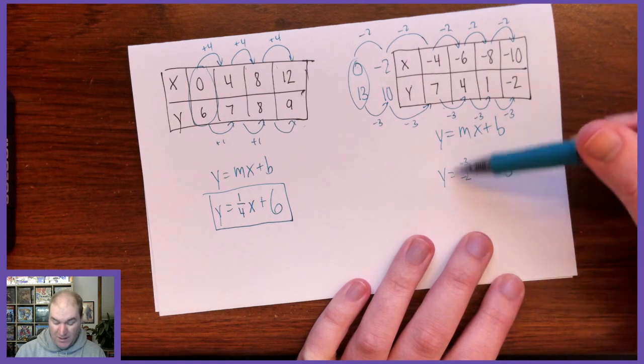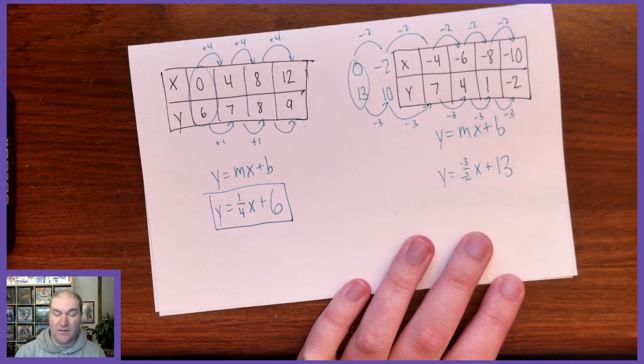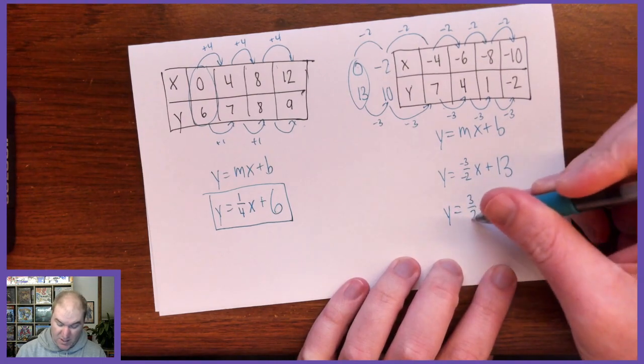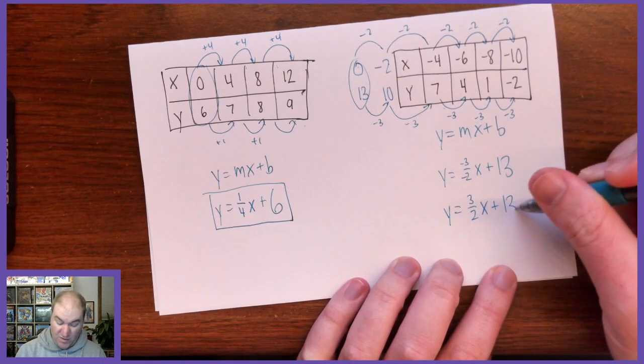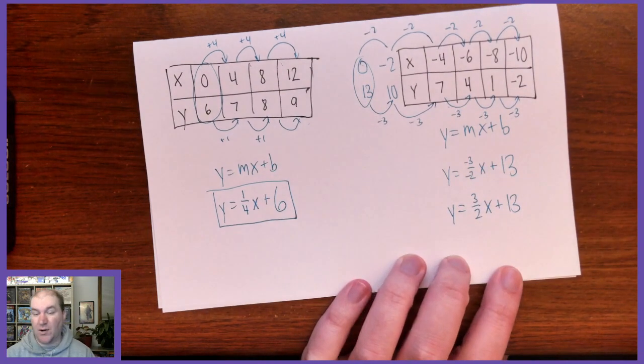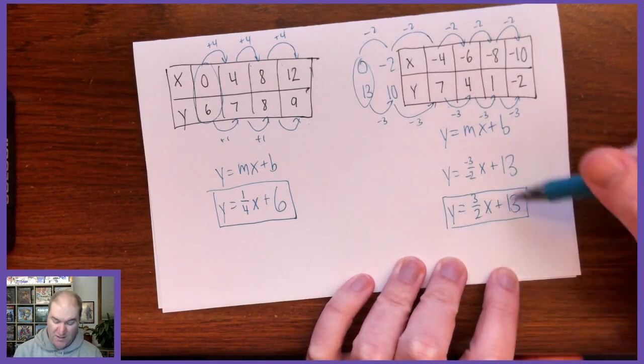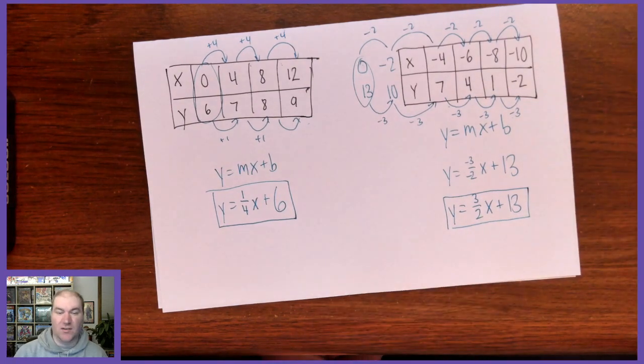So our answer is going to be y equals negative 3 divided by negative 2. That's just 2 negatives. So we're just going to make it 3 halves. Remember, slope should be a fraction like I said earlier, but it should always be written as an improper fraction, not a mixed number. So the equation of this line is y equals 3 halves x plus 13.